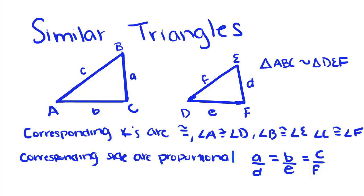So when we say we have similar triangles, it means that their corresponding angles are congruent and their corresponding sides are proportional. So if triangle ABC is similar to triangle DEF, angle A is congruent to angle D, angle B is congruent to angle E, angle C is congruent to angle F, and their sides are proportional. So A over D is equal to B over E is equal to C over F.